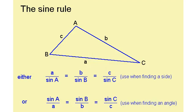There are two forms of the sine rule. This one, which you use when you are finding a side, will be given to you on the exam paper. You can easily rearrange this to get the form to use when you are finding an angle. Whichever one you use, you will only ever need to use two parts of it. You will never need to use all three.